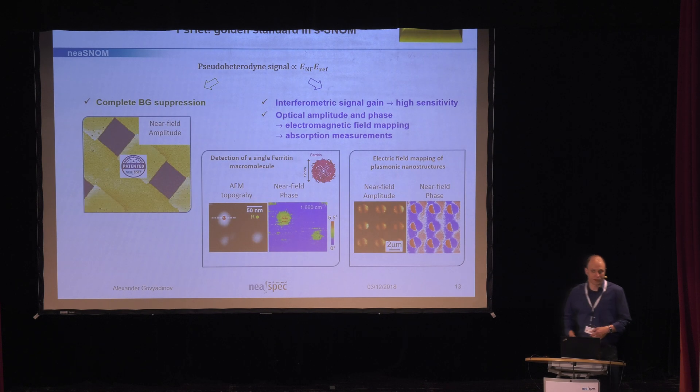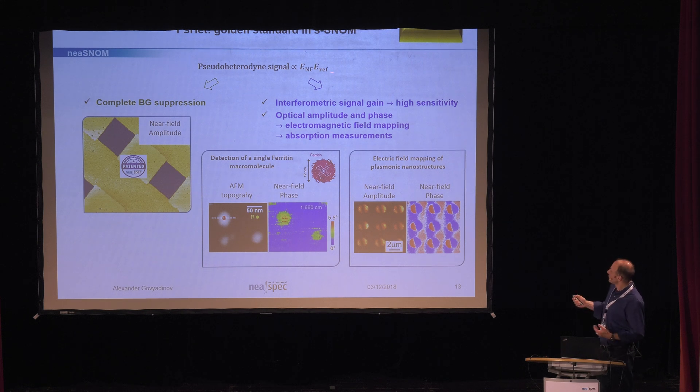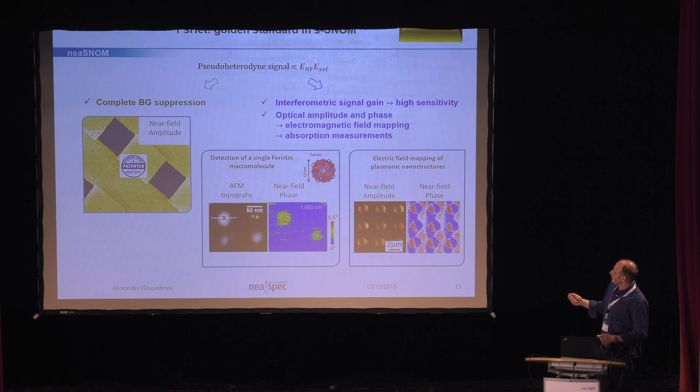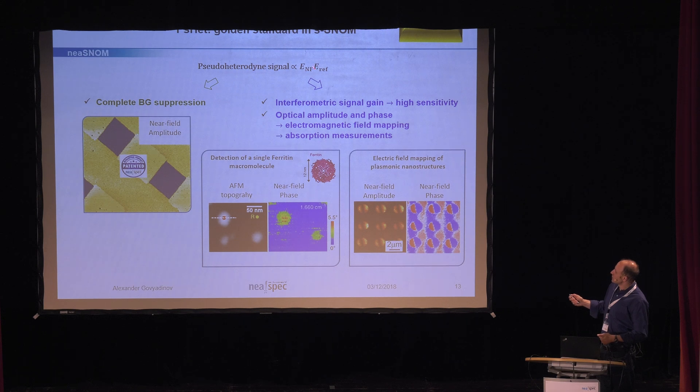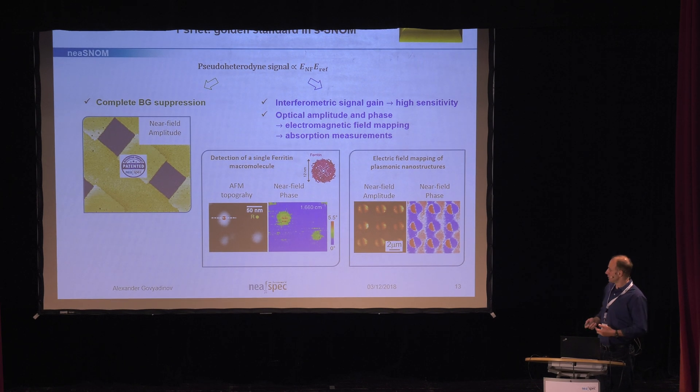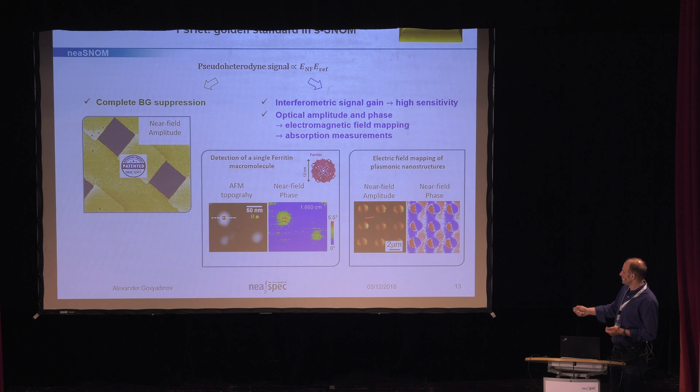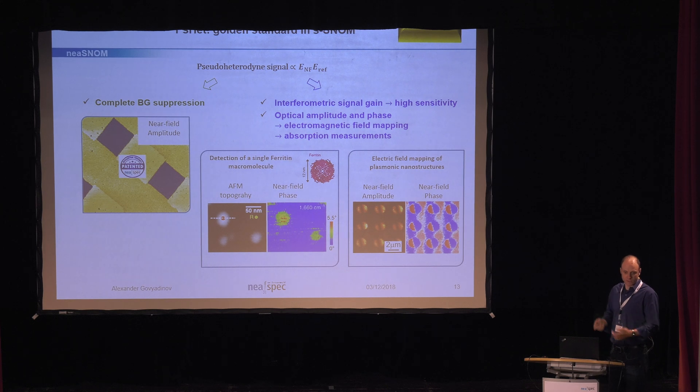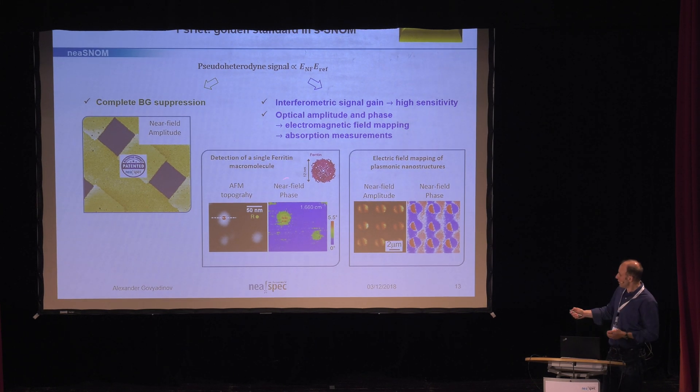And it has additional benefits. Besides the full suppression of the multiplicative background, it also provides a so-called interferometric gain because the reference field could be strong. So, it boosts our signal. The sensitivity goes up. And at the same time, you see, now you see that this is not the intensity of the field, but actually the magnitude, the field itself is here. And we can measure amplitude and phase with respect to the reference, of course, of our near field signal. And this is very important, for instance, in the applications like field mapping. We have gold structures here. You can see the magnitude, but you can also measure the phase. And in many cases, phase is important. It characterizes the mode structure and provides a lot of benefits.